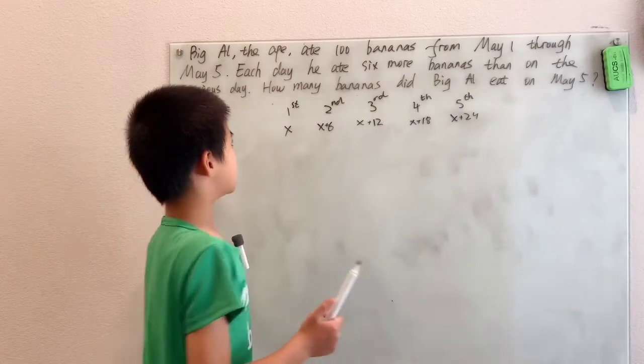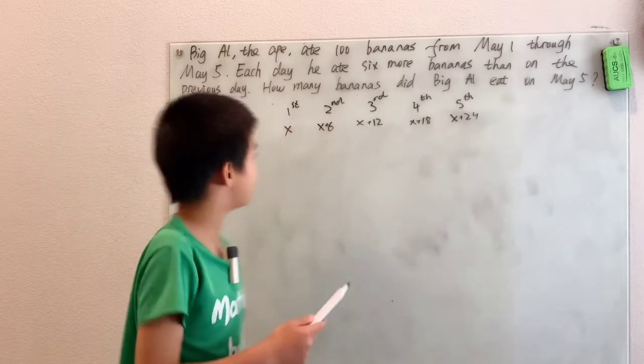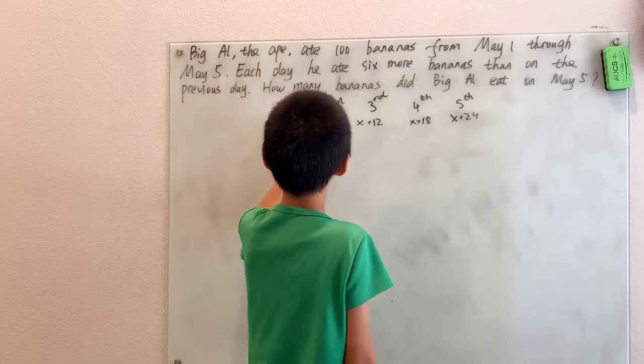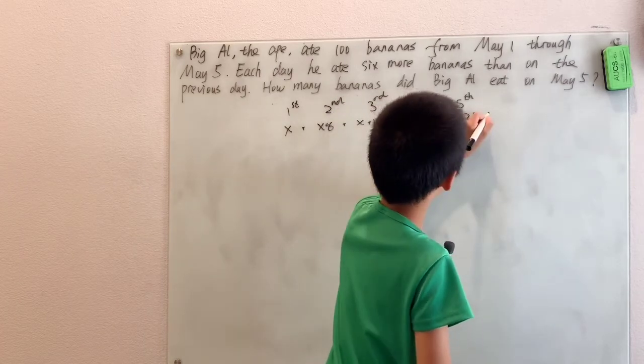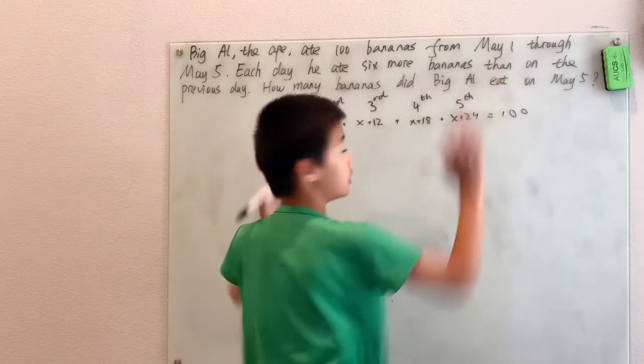And because he eats 100 bananas in all from May 1st through May 5th, that means all of these added together is equal to the 100 bananas he eats from May 1st through May 5th.